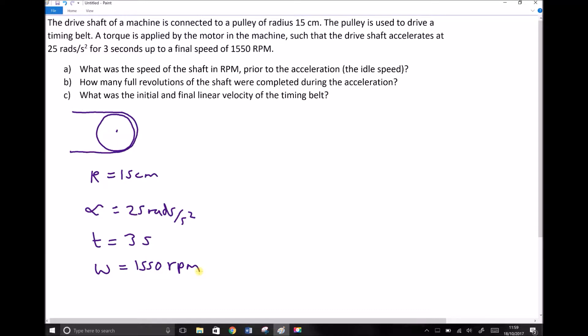We need to make sure that everything there is in SI units. So our radius of 15 centimeters when converted to meters we divide by 100 to get from centimeters to meters giving us 0.15 meters.